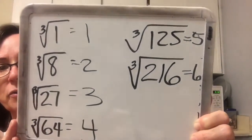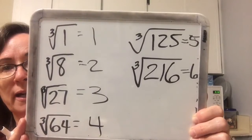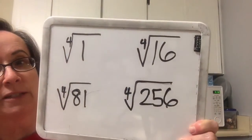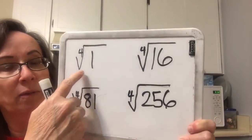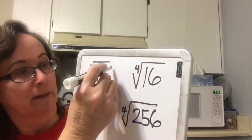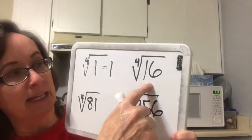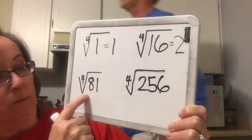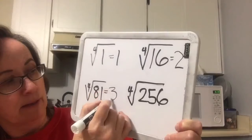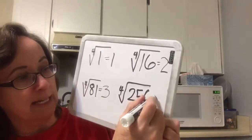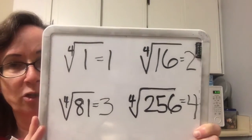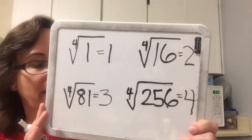Those right there you should memorize. And now we're going to look at some fourth roots. Fourth roots climb much faster. The fourth root of 1 is 1. The fourth root of 16 is 2. The fourth root of 81 is 3. And the fourth root of 256 is 4. Those are also some that you should memorize so that you can do your work faster.